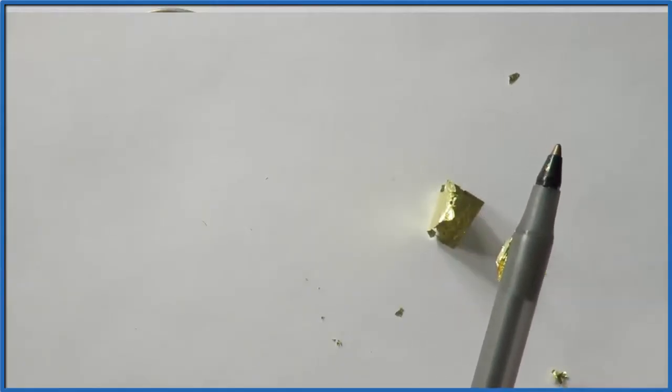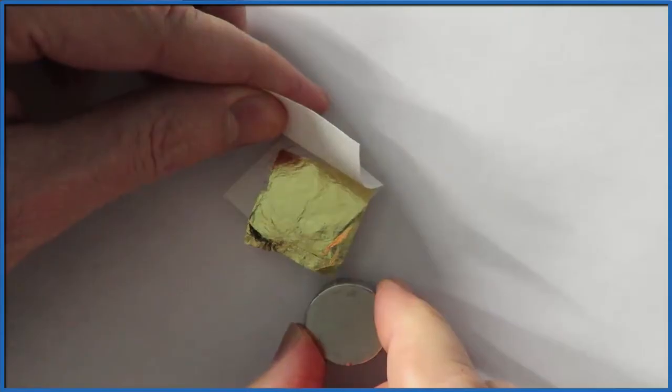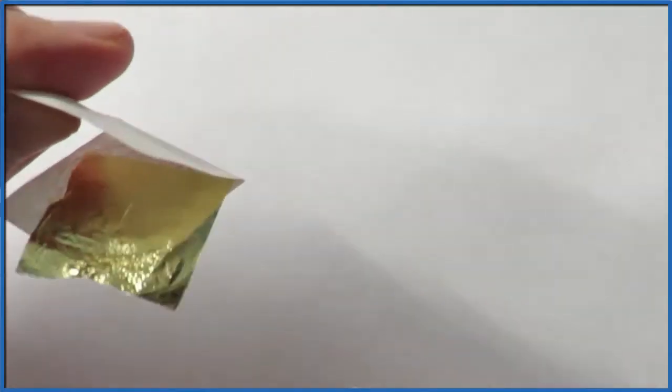Touching the magnet to it, I have to make sure there's no static charge on my hands or the magnet. We can see that really there isn't any attraction from the magnet. Gold is not a magnetic substance and does not respond to magnets.